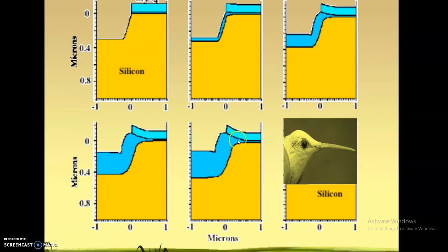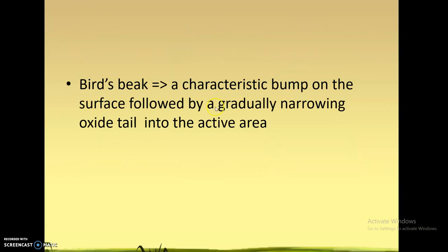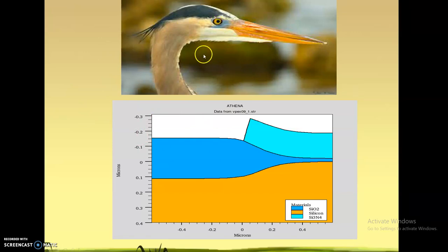This problem is called a bird's beak. You can define it as a characteristic bump on the surface followed by a gradually narrowing oxide tail into the active area. Looking at the shape of the field oxide and the portion where it pushes into the pad oxide and pushes the silicon nitride up, it really does look like a bird's beak.